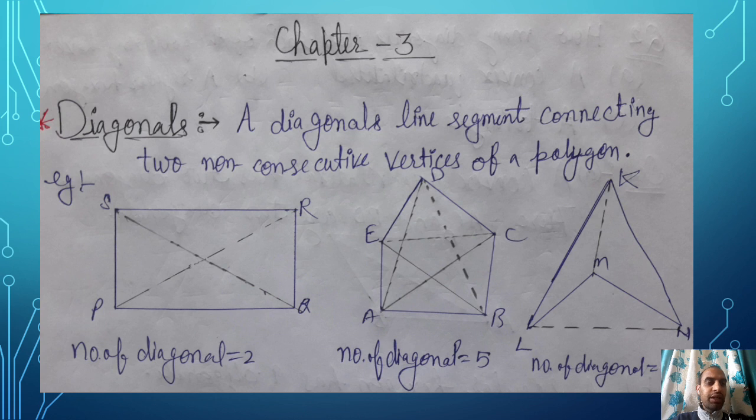Just see the first example. It is a rectangle. Here I have drawn two lines. These are the maximum possibility to join the points. See, P and Q are not consecutive.